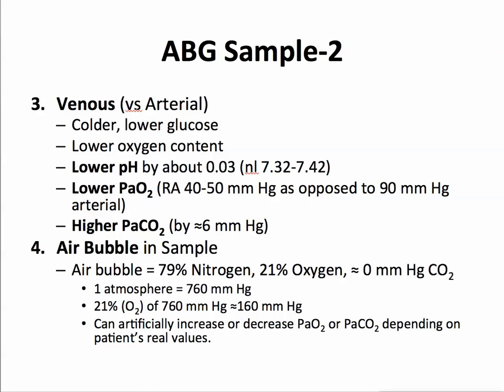If you have an air bubble in the sample, remember that air bubble is mostly nitrogen and 21% oxygen, with little to no CO2. One atmosphere equals 760 mmHg, and 21% of 760 is about 160 mmHg oxygen. So if the patient's PaO2 was drawn on room air — normally about 90 — that bubble has more oxygen in it, and it will diffuse from the bubble into the blood sample, raising the PaO2. Conversely, that bubble has very little CO2, so CO2 will diffuse from the patient's blood into the bubble, lowering the patient's CO2.